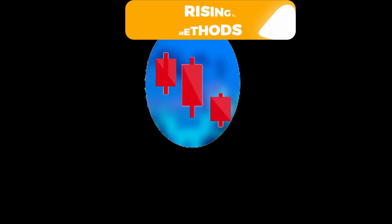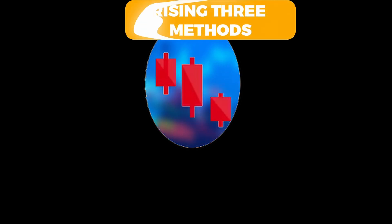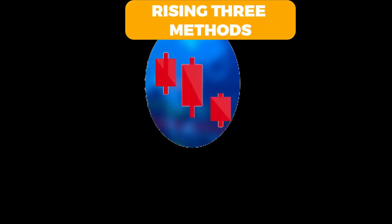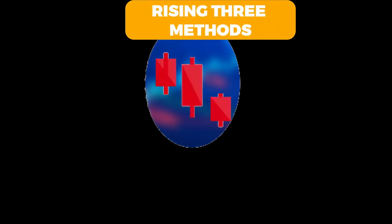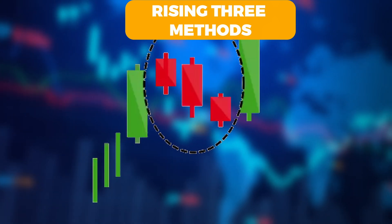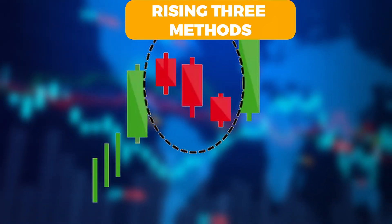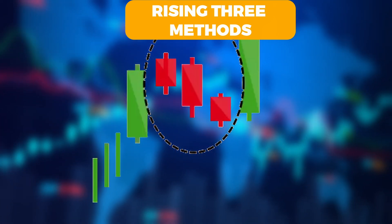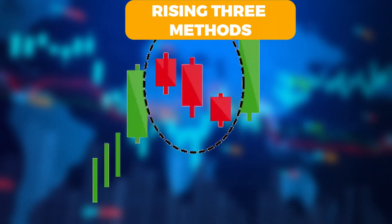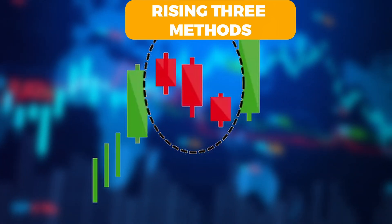Rising three methods is the bullish counterpart to the falling three methods. This pattern includes three short red candles sandwiched within two long green candles, showing that despite some selling pressure, the overall bullish trend is likely to continue.